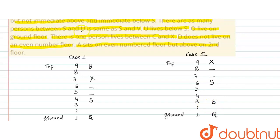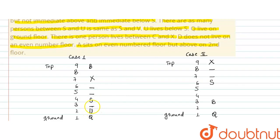There are as many persons between S and U as between S and V — यहाँ पर S की position है। U की position नीचे रख सकते हैं — एक person का gap है S और U के बीच में — और S और V के बीच में भी एक person का gap होगा। U lives below S — यहाँ पर U और V की positions place होंगी।